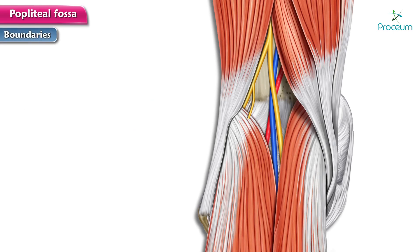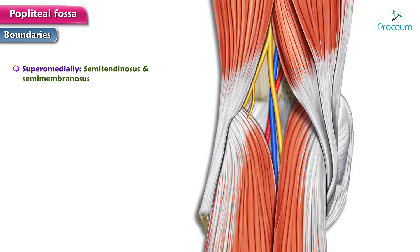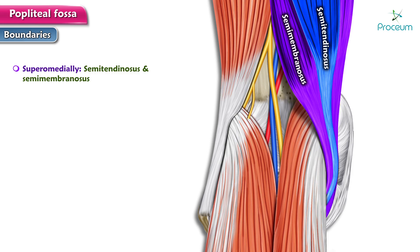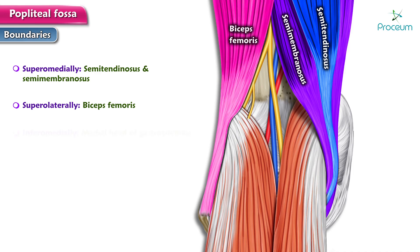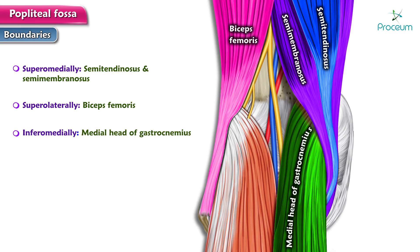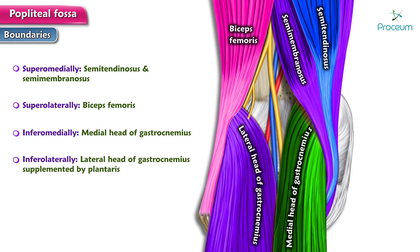Boundaries of the popliteal fossa. The popliteal fossa is bounded superiorly medially by the semitendinosus and semimembranosus muscles. It is bounded superiorly laterally by the biceps femoris. Inferiorly medially, it is covered by the medial head of the gastrocnemius, and inferiorly laterally by the lateral head of the gastrocnemius, supplemented by the plantaris muscle.